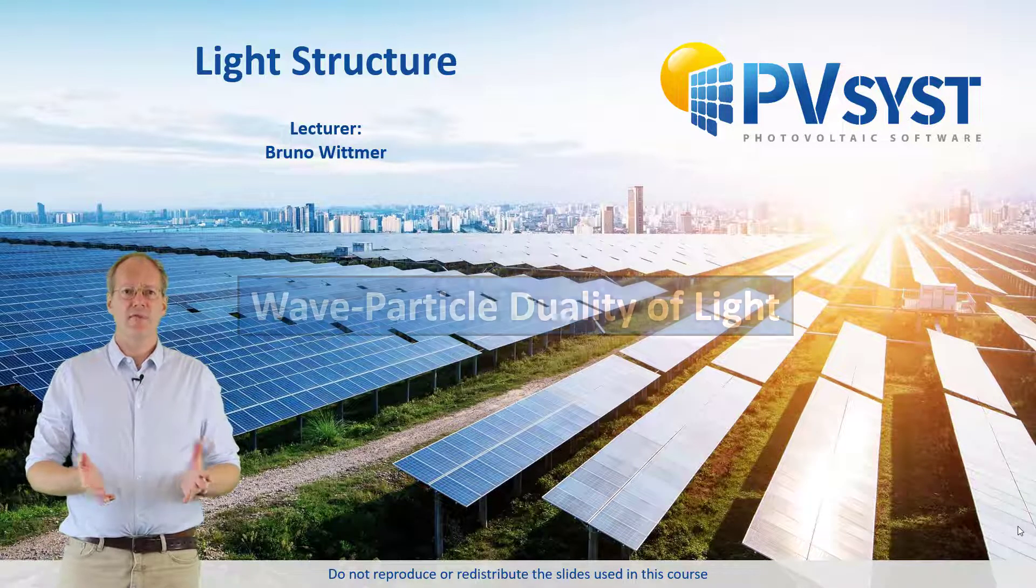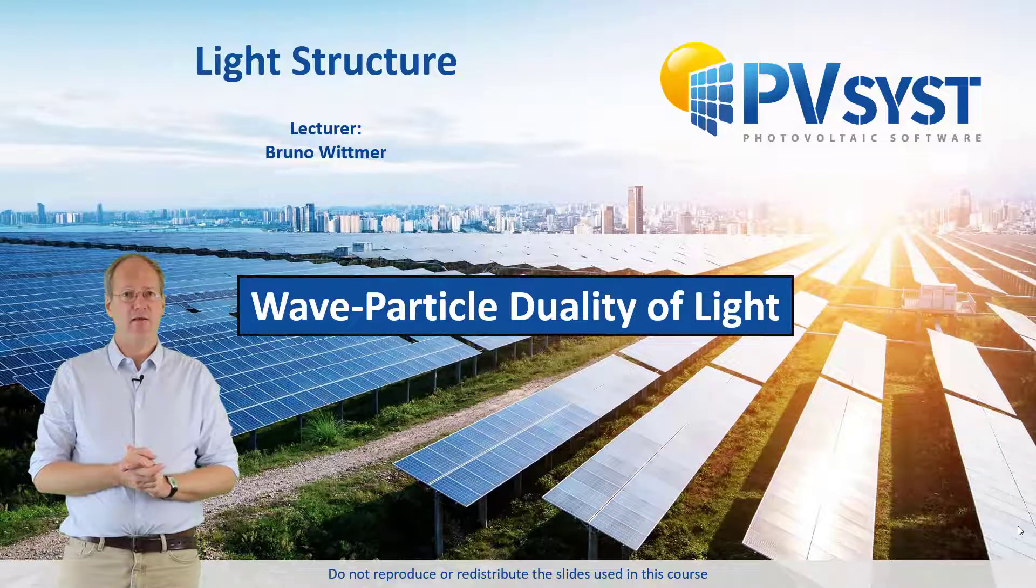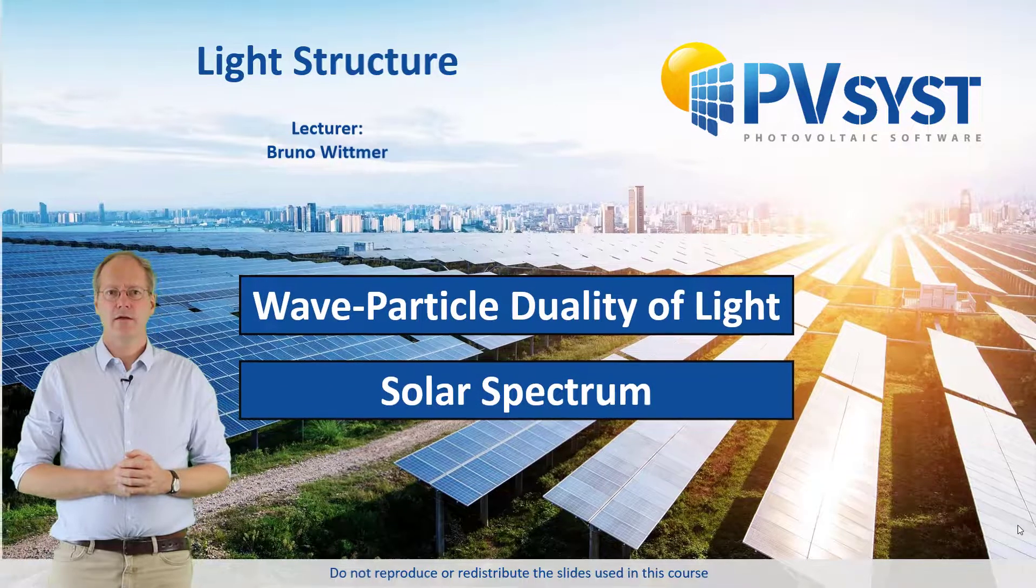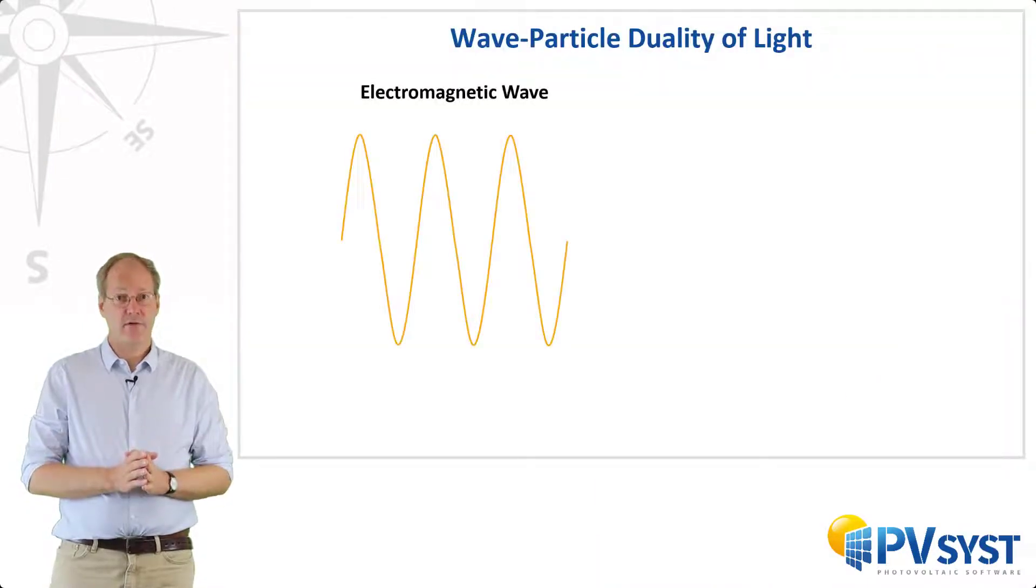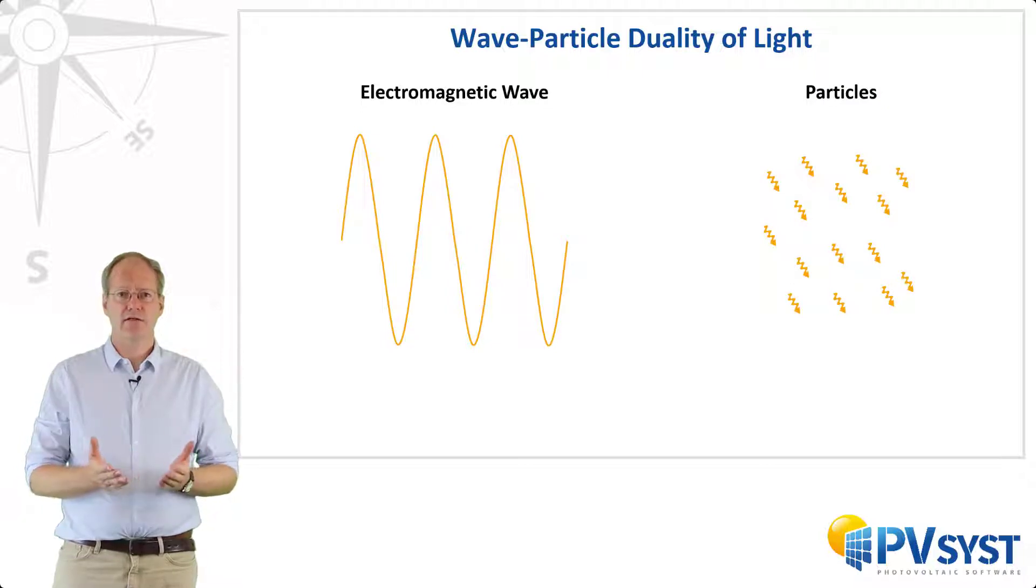We will discuss the wave-particle duality of light and the solar spectrum. Light might be described either as an electromagnetic wave or as a flux of particles. This wave-particle duality is a quantum mechanical concept stating that every quantum object, including light, can be expressed as a wave or a particle interchangeably.